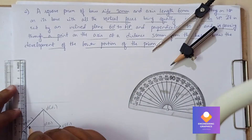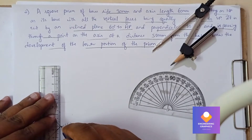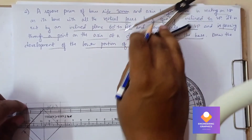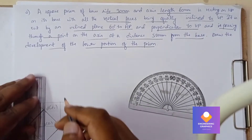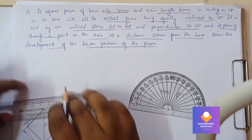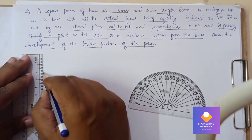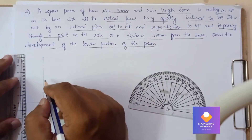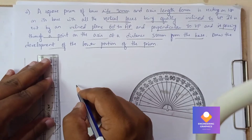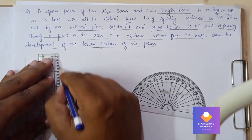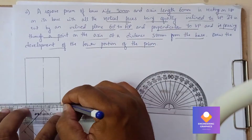Draw the XY line and draw projection lines from all these ends. Then draw lines of length 60mm — that is 6 centimeters from the scale. Draw the vertical axis line, and using the axis line we can draw the front view of the square prism. That completes the front view — you get a rectangular face.